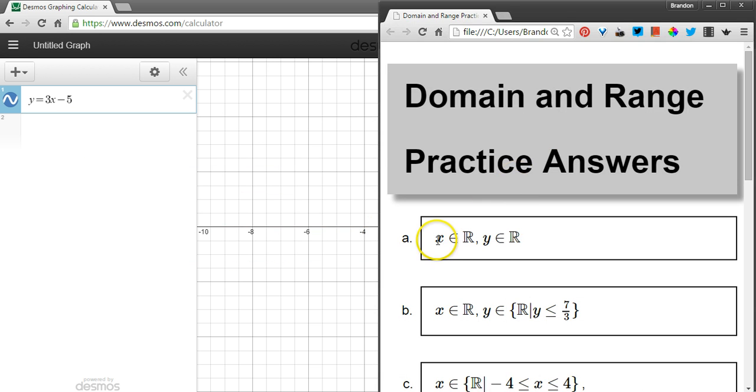Looking at the answers, I have that x is an element of the reals or x is part of the set of real numbers, and there are no restrictions. So that's the domain. All x values are possible as long as it's a real number. Same with the y values. All real y values are possible for the range.